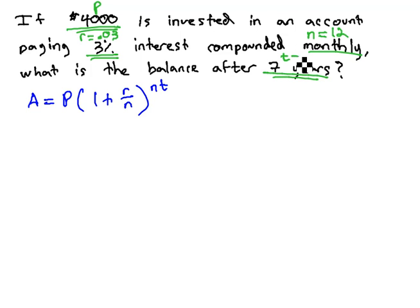That's the amount of time that's going to pass is 7 years. And so when we plug this into our formula, our principal is 4,000 times 1 plus r, .03 over n, 12 months in a year, to the nt, 12 months in a year, times 7.